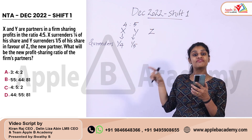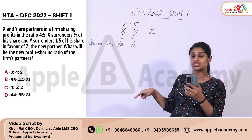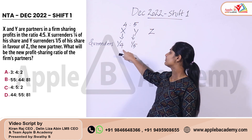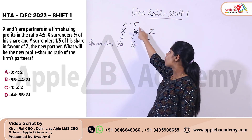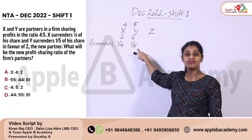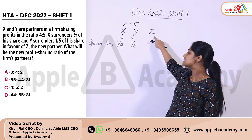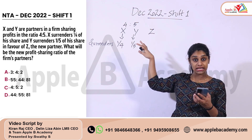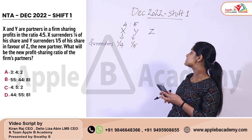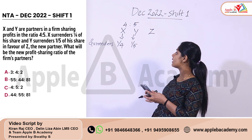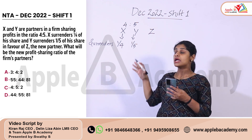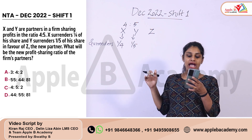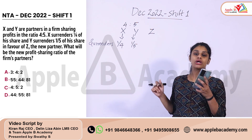X surrenders 1/4th of his share and Y surrenders 1/5th of his share. Z is going to receive a part of their shares — 1/4th from X and 1/5th from Y. From this we calculate the new profit sharing ratio.